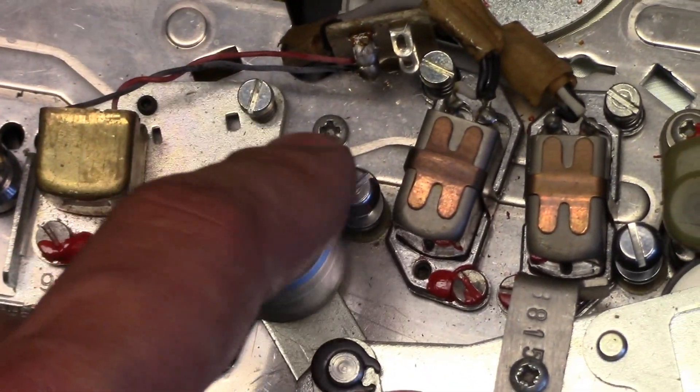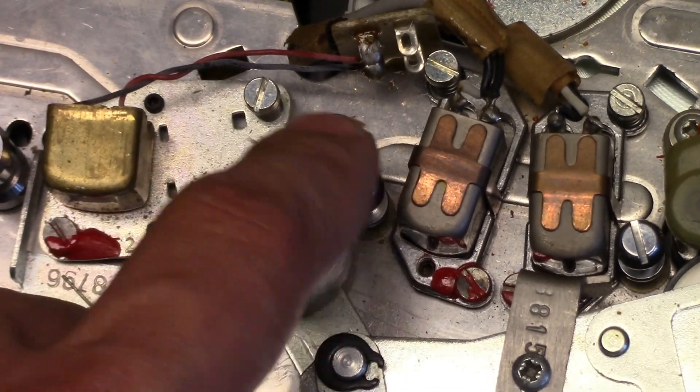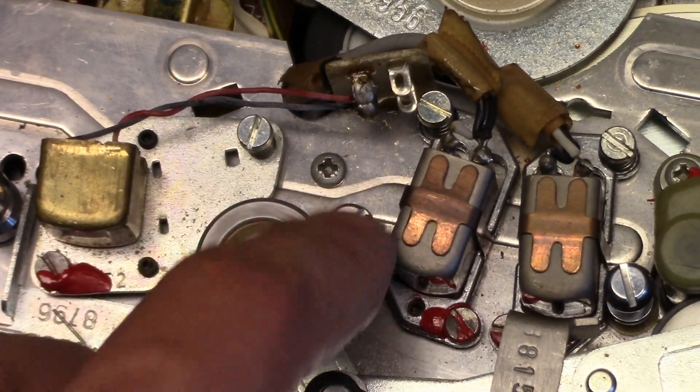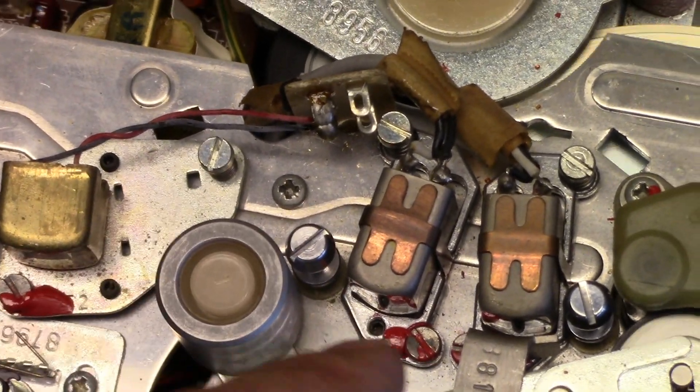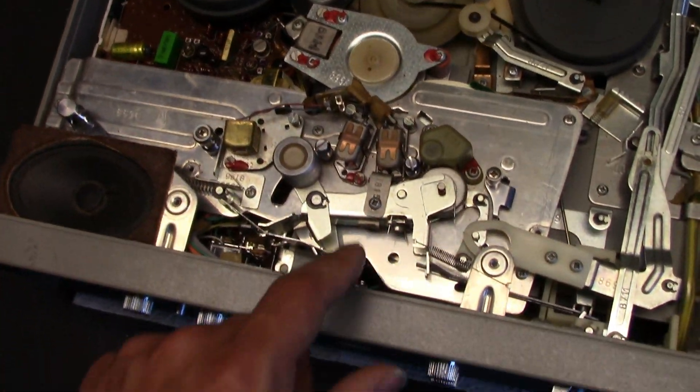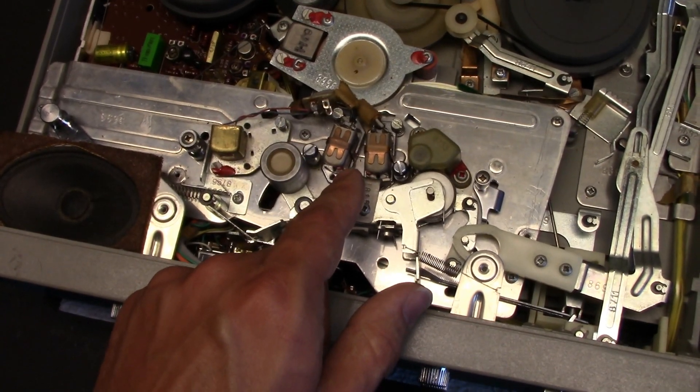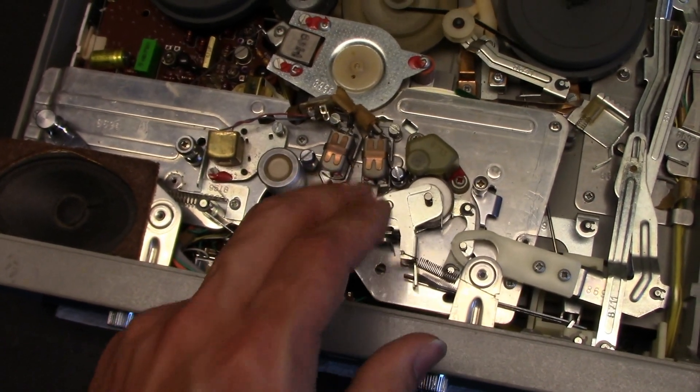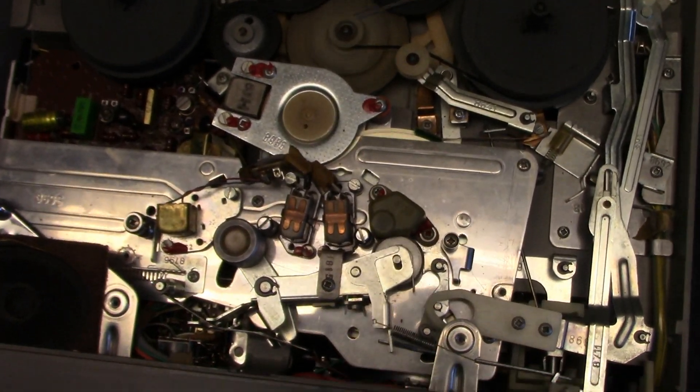Also, this roller here pushes up against the tape to add extra pressure down onto the heads. That back tension combined with this roller is what holds the tape up against the heads, as it does not use foam pads.